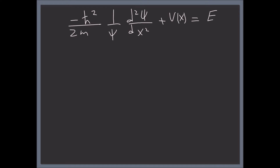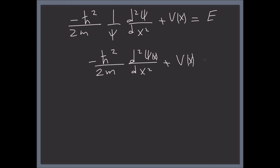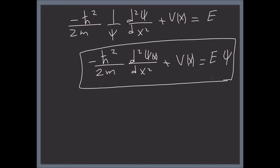Let's manipulate the spatial equation to put it in a nice form. We have: −(ħ²/2m)·(d²ψ/dx²) + V(x)·ψ = E·ψ. Note that ψ is now only a function of x — t is no longer present. This, my friends, is the time-independent Schrödinger equation.